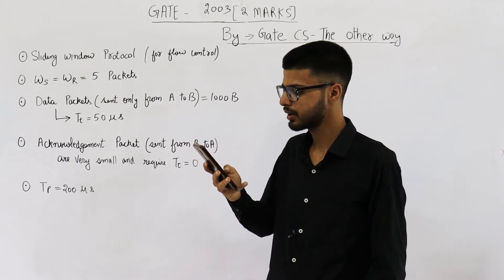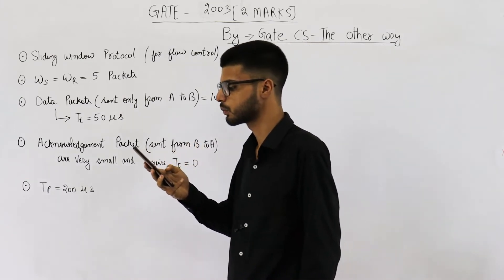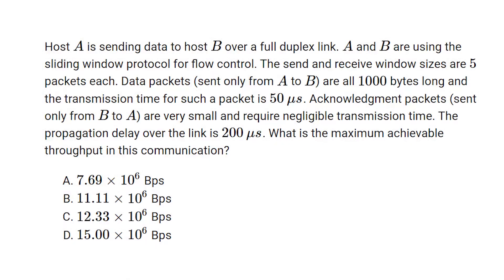Host A is sending data to host B over a full duplex link. A and B are using the sliding window protocol for flow control. The send and receive window sizes are 5 packets each. Data packets sent only from A to B are all 1000 bytes long and the transmission time for such a packet is 50 microseconds.